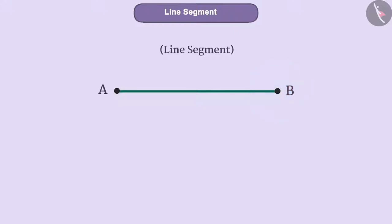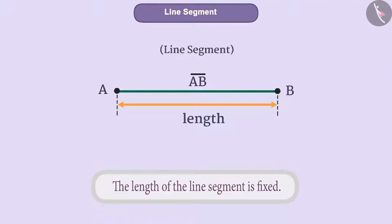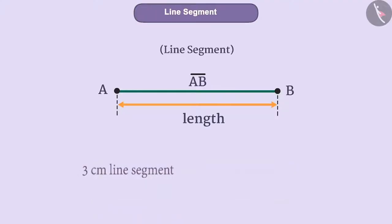We write its name as AB and read as line segment AB. Since the line segment starts at one fixed point and ends at another fixed point, its length is definite. This means that if we know the length of the line segment, then we can draw one.